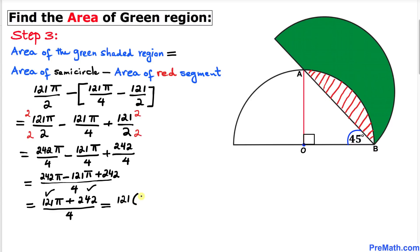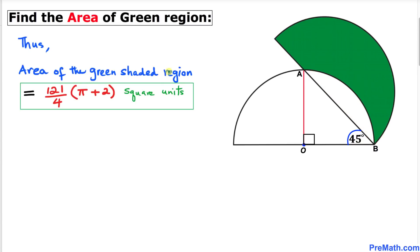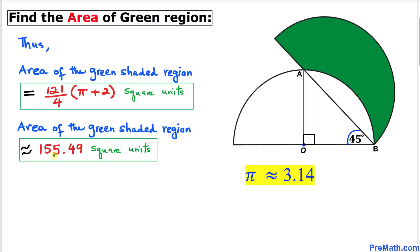We can factor out 121 from the numerator, giving us 121 times the quantity pi plus 2, all divided by 4. So the area of this green shaded region turns out to be 121 divided by 4 times (pi plus 2) square units. If we replace pi with 3.14, the area is approximately 155.49 square units. Thanks for watching, and please don't forget to subscribe to my channel for more exciting videos. Bye!